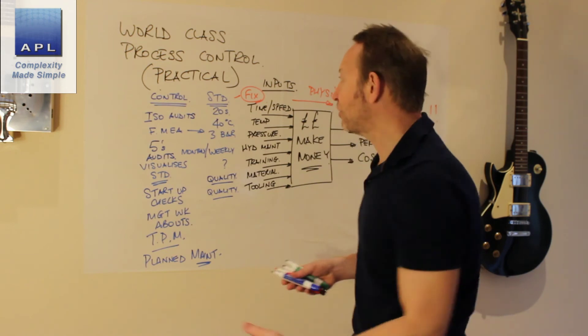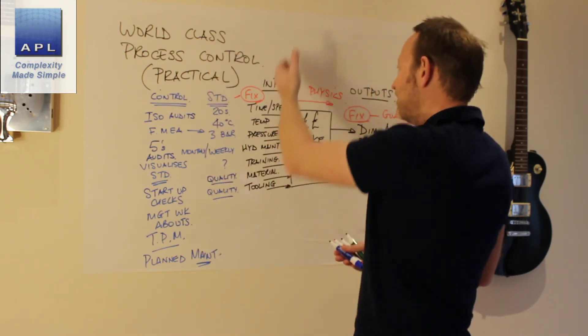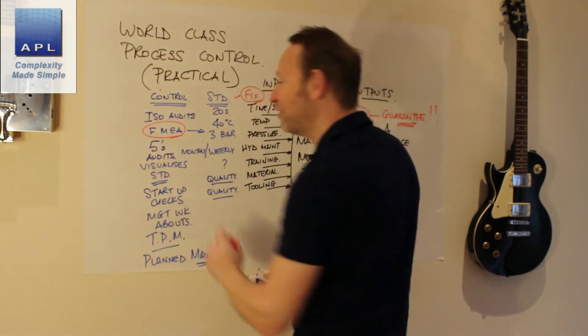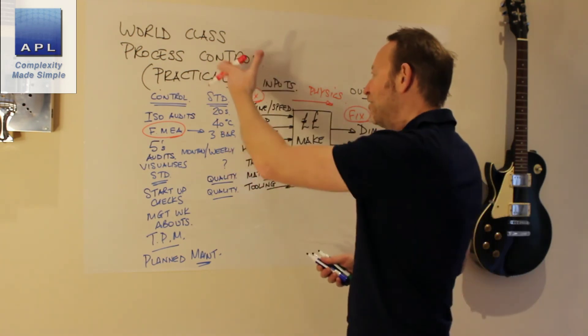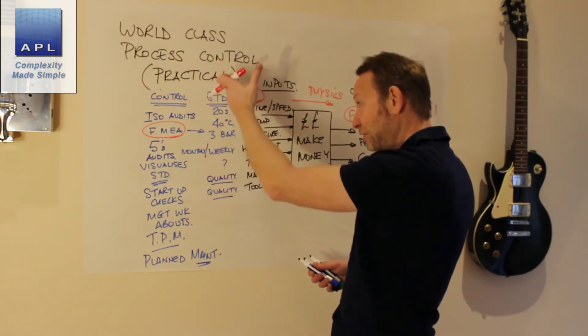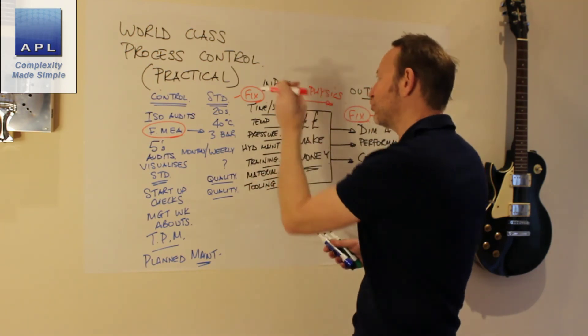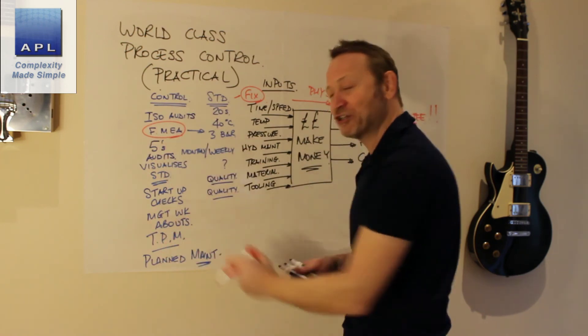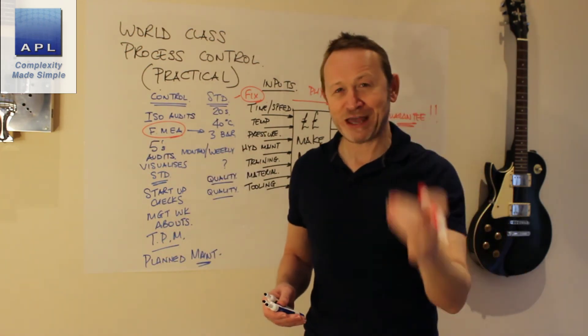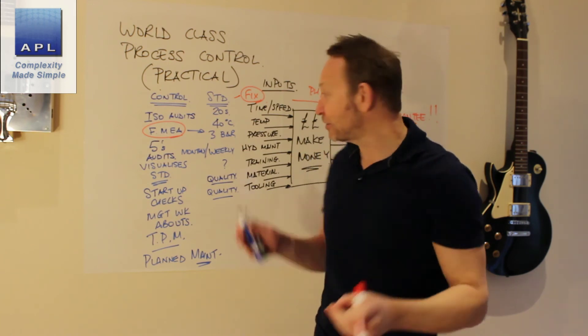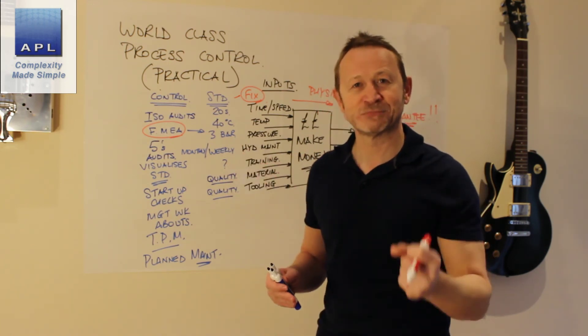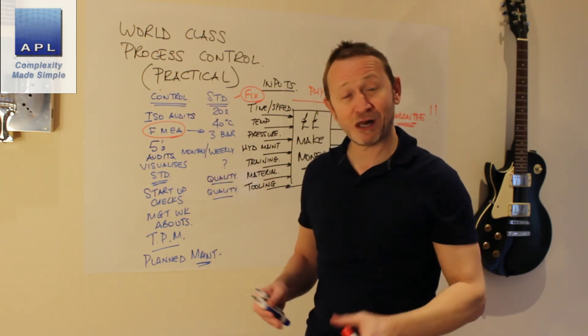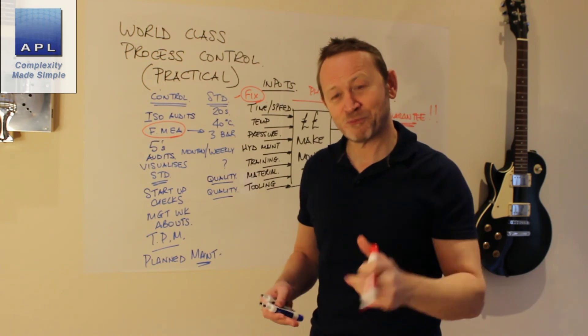World-class companies get process control by identifying all the variables. FMEA does this. It identifies all the inputs to the process. They devise a standard. How am I going to control, fix that input? And then, how am I going to police that control? And if anything or anybody violates the control rule, they stop the machine and they put it right. And that is world-class practical process control.